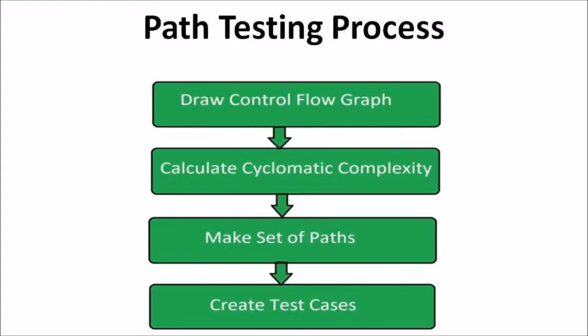The path testing process includes: control flow graphs, calculate cyclomatic complexity, make set of paths, and finally create test cases. In the control flow graph step, draw the corresponding control flow graph of a program in which all executable paths should be discovered.